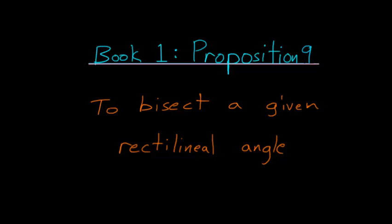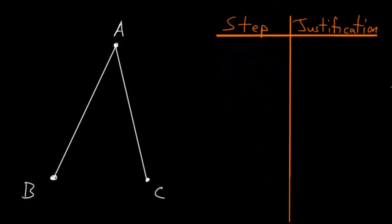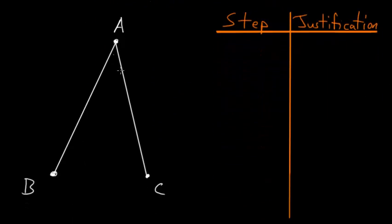Book 1, Proposition 9 of Euclid's Elements is a construction proof that focuses on bisecting a given angle. So if we start with an angle, in this case the angle BAC, our goal is to take this angle and cut it in half, essentially. Or in other words, we are bisecting it.